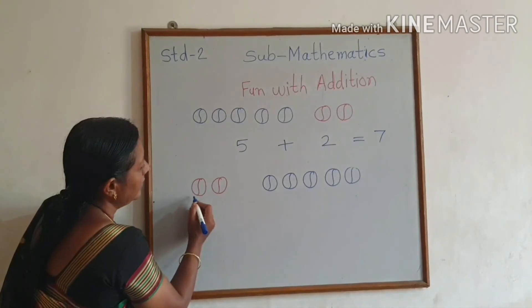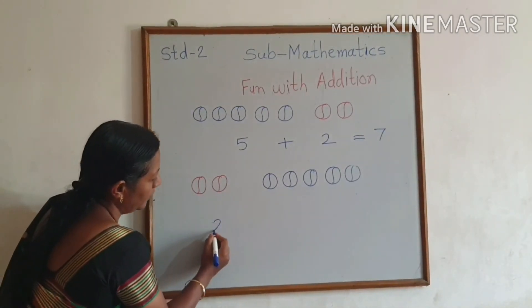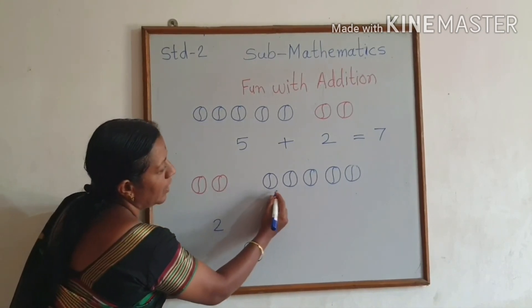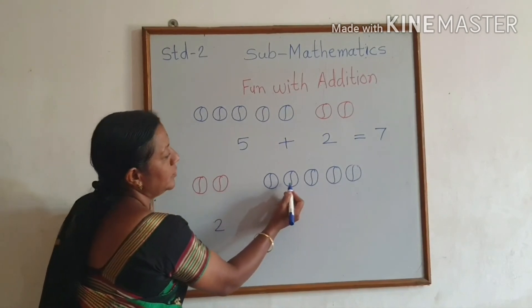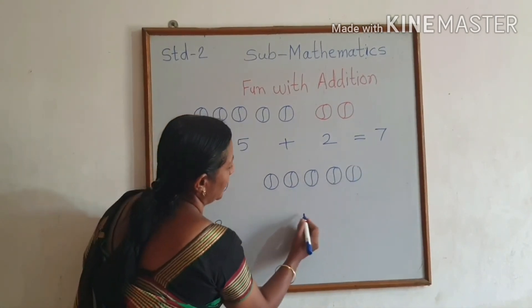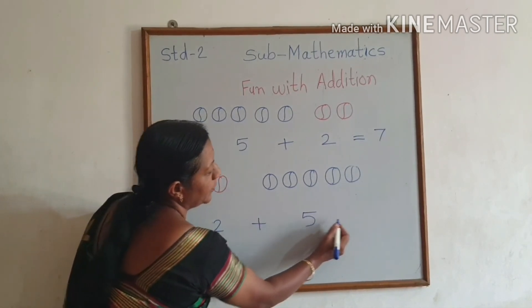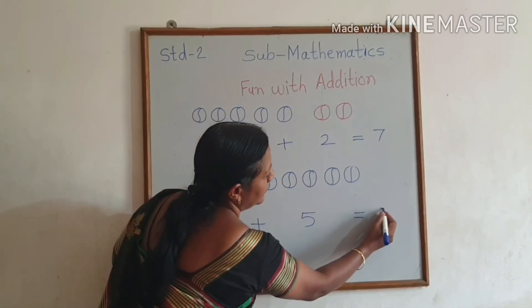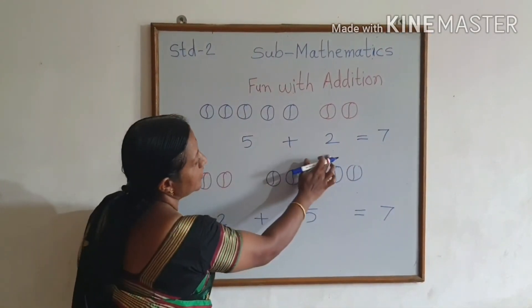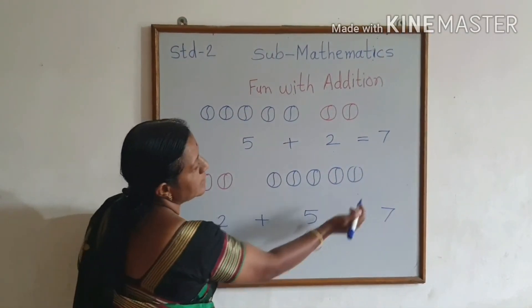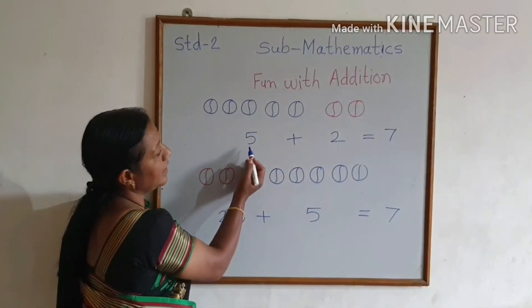Then count the red colored balls: 1, 2, 3, 4, 5. 2 plus 5 is equal to 7. It means that changing the order does not change the sum.